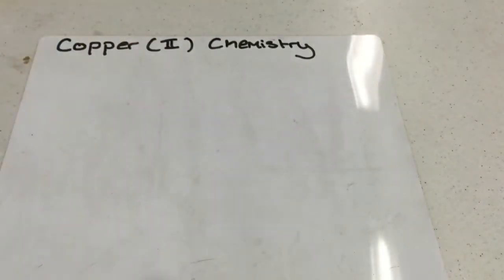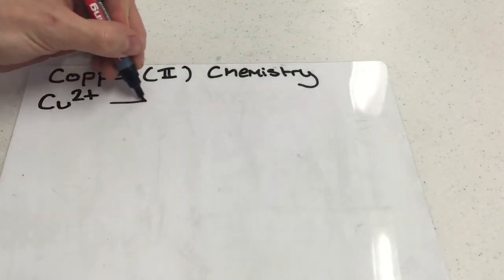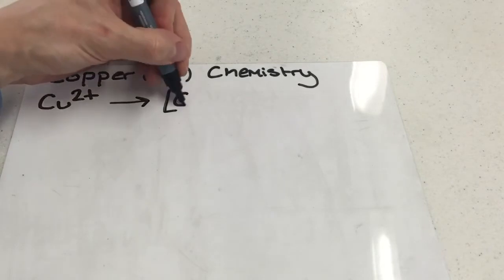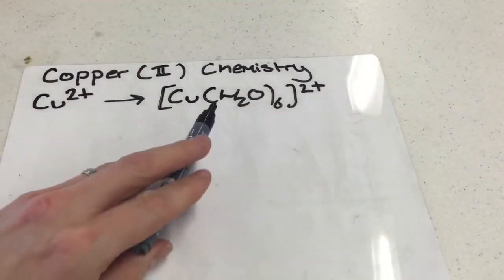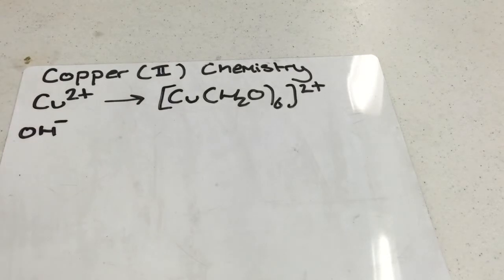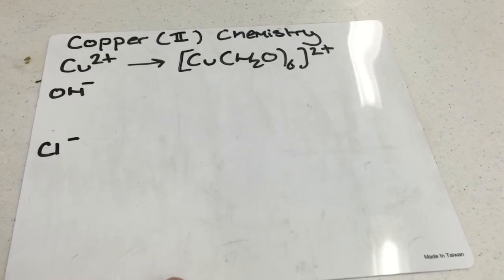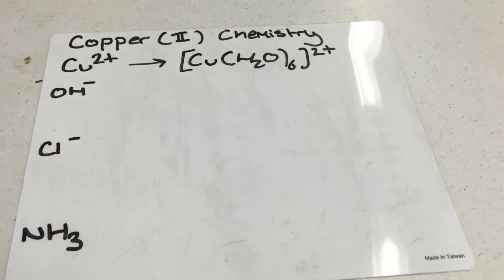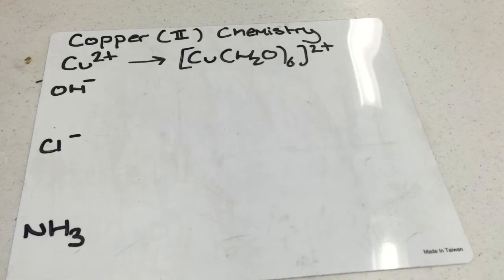The equations you need to know for copper 2+ chemistry involve reacting the copper 2+ ion in its hexa aqua formation. Remember to use square brackets: [Cu(H₂O)₆]²⁺. You need to know what happens when this reacts with OH⁻ ions from sodium hydroxide, with Cl⁻ ions from HCl, and with ammonia. All of these are examples of monodentate ligands — a ligand is a molecule or ion which donates a pair of electrons to form a coordinate bond with a transition metal ion.